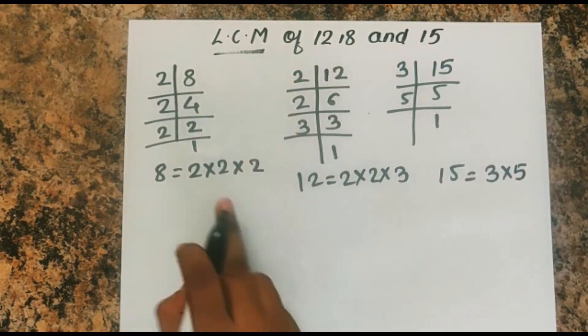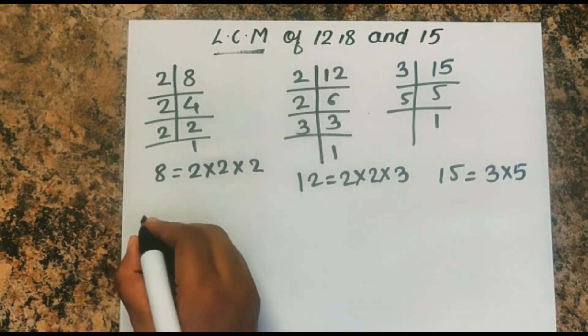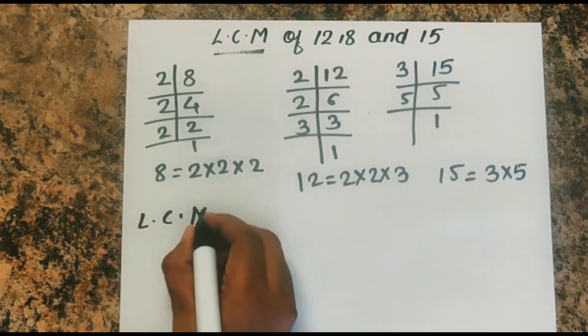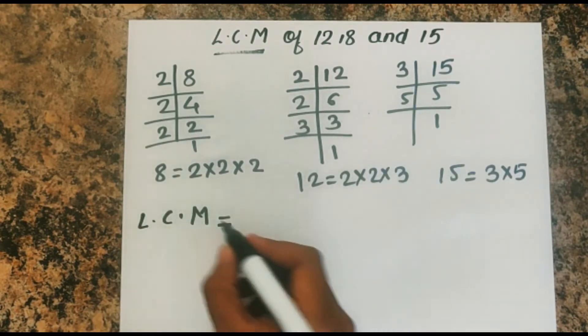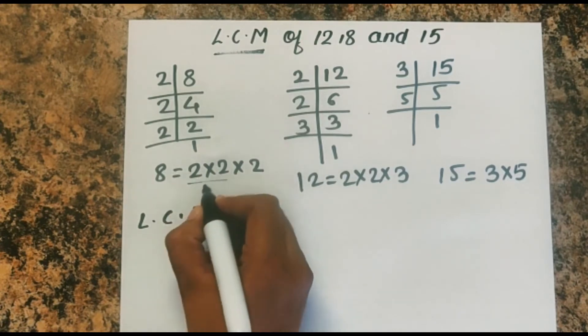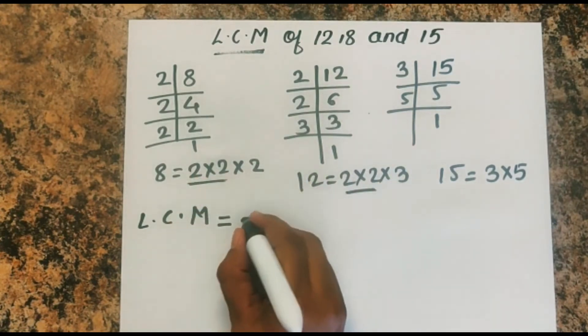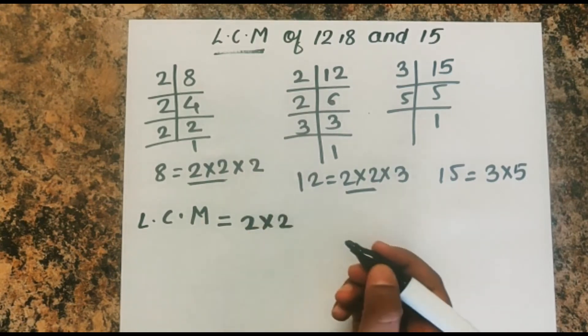So there is no factor in common between all three. But we will consider 8 and 12 first. 2 into 2 in both - this is common.